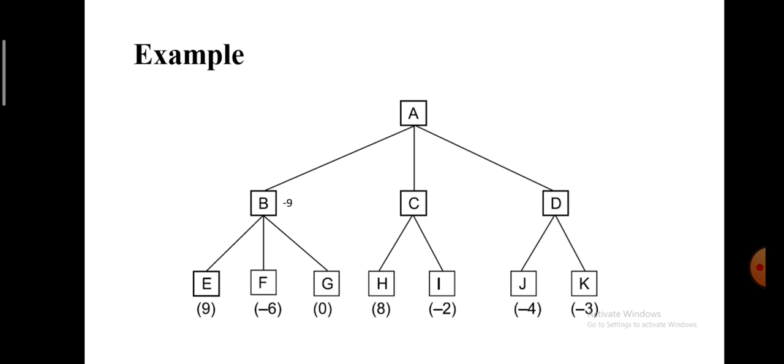Similarly, in the second subtree headed by node C, we need to choose 8 and put a negative sign against it.